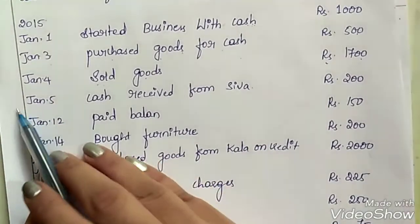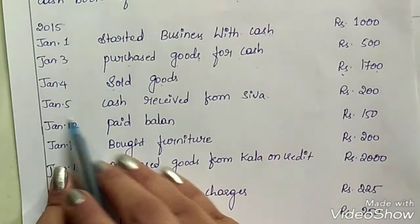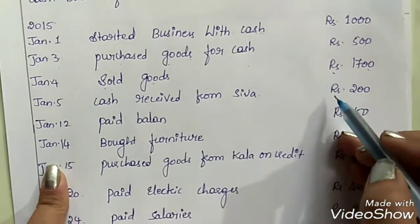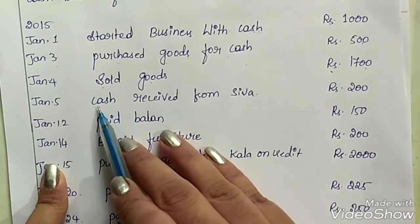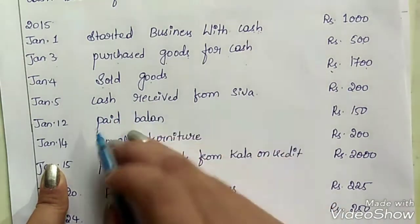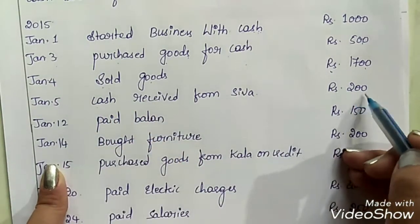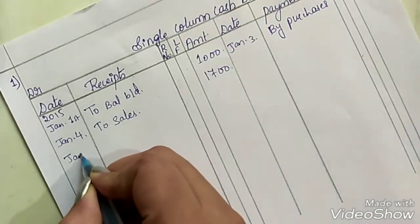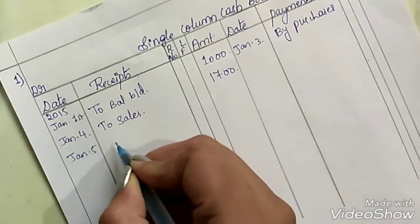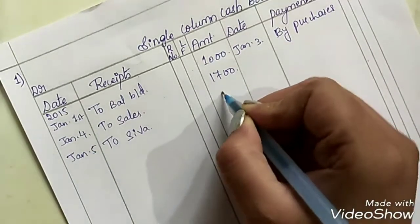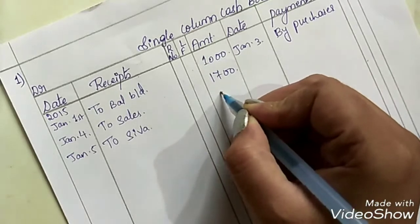On January 5th, cash received from Siva Rs. 200. It is clearly mentioned that we are receiving cash, so take it on the receipt side. Entry: January 5th, to Siva, Rs. 200.